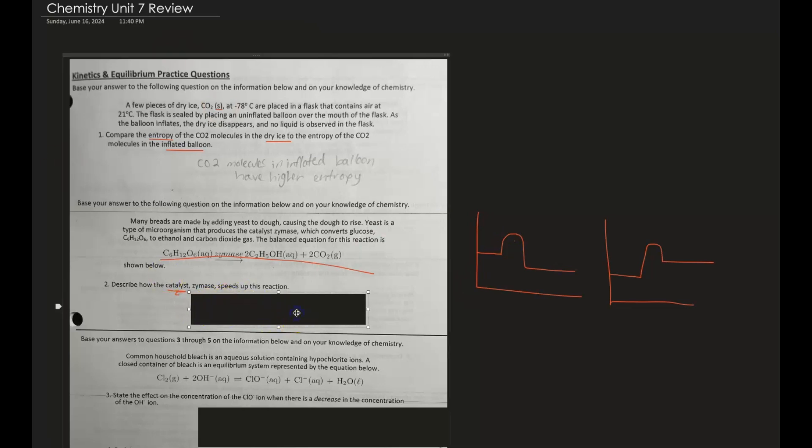Number three: state the effect on the concentration of the ClO- ion when there's a decrease in concentration of the OH- ion. So OH- is right here.